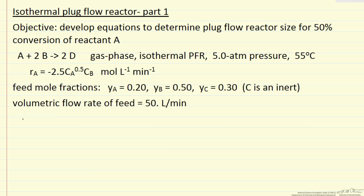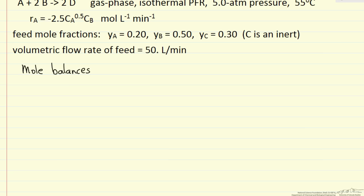What we want to do is write down the mole balances. The change in the molar flow rate of A with respect to cumulative volume, so FA is moles per minute in this case, is the rate of reaction, where the rate of reaction is minus 2.5 times CA to the 0.5 times CB. The minus sign is very important here because A is reacting away, and depends on the concentrations of A and B.